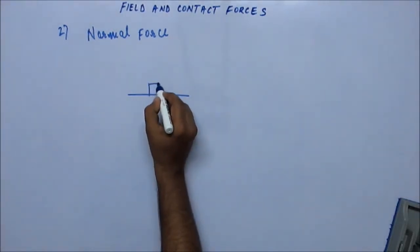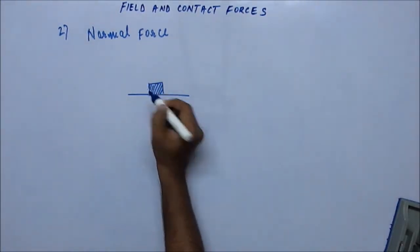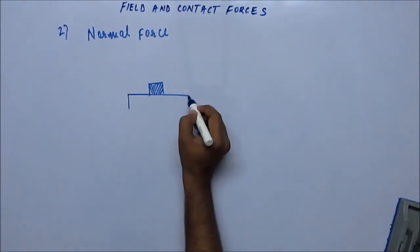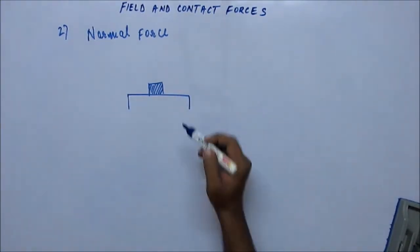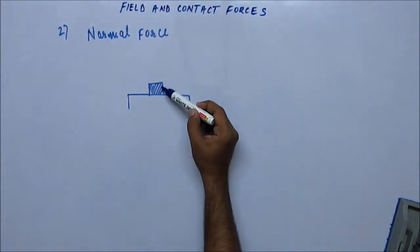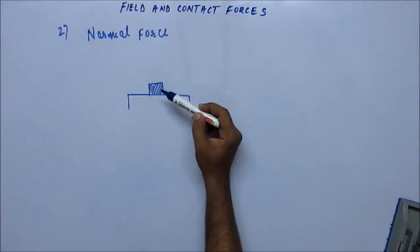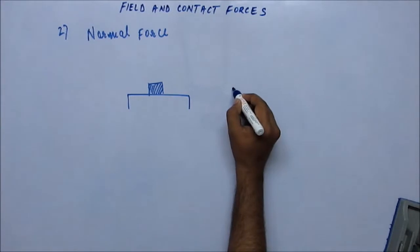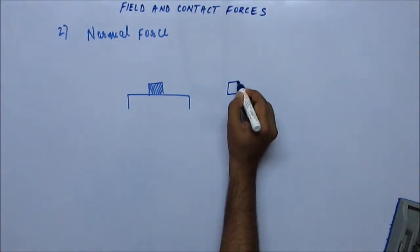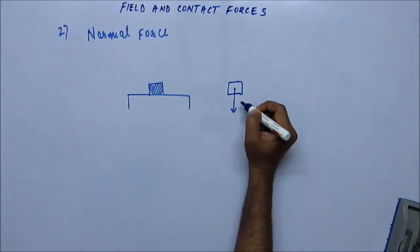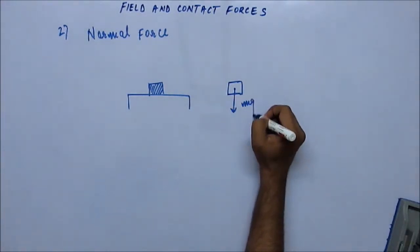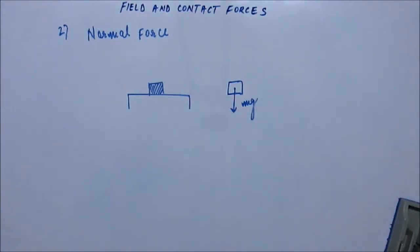Let's consider a situation in which a block is kept on a table. Let's see what kind of forces are acting on the block. If we isolate this block from the whole system and think of what forces are acting on it, one force we have already identified is mg — the force due to gravity.